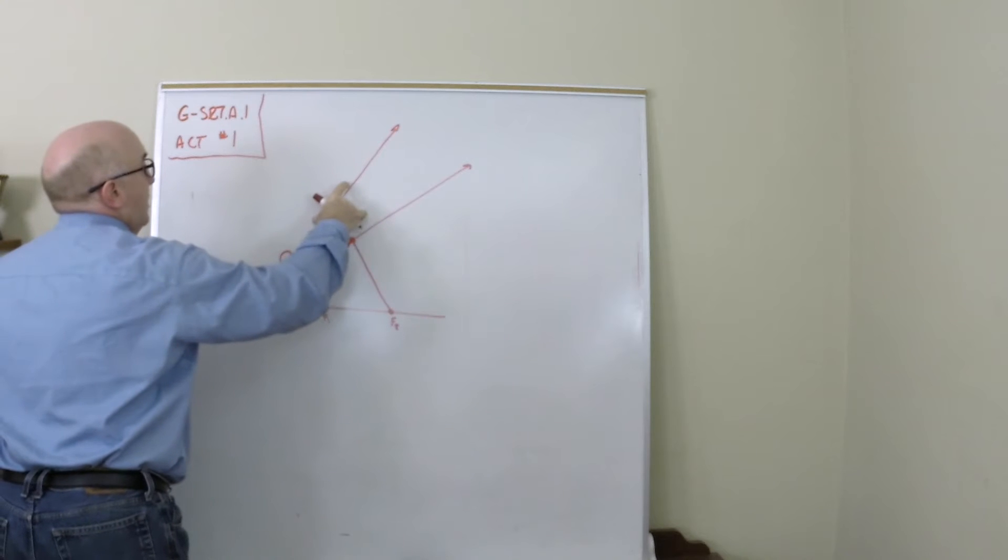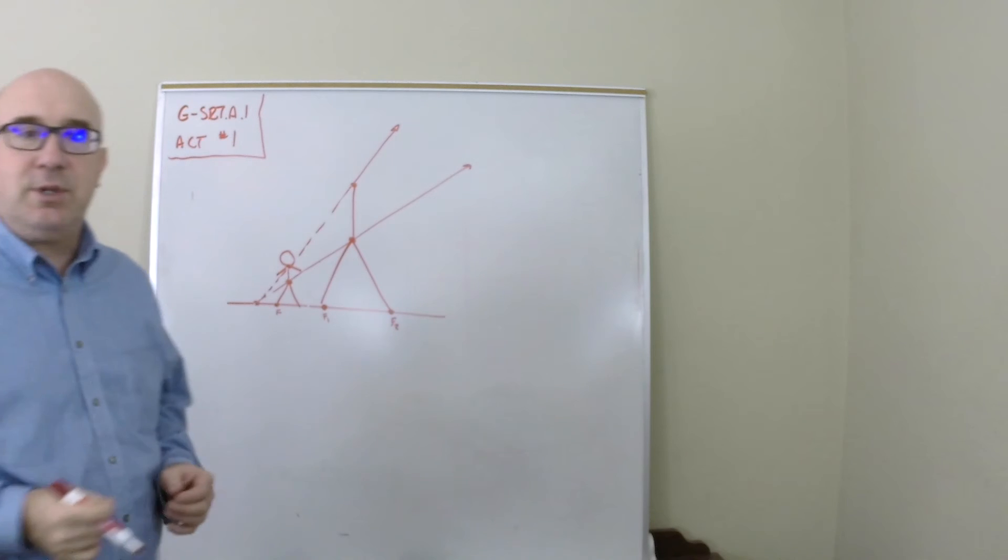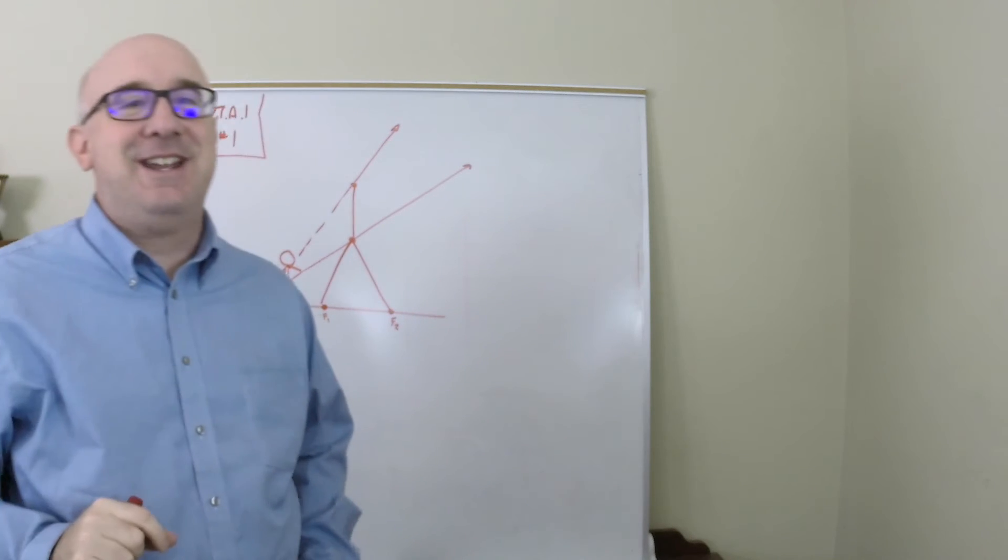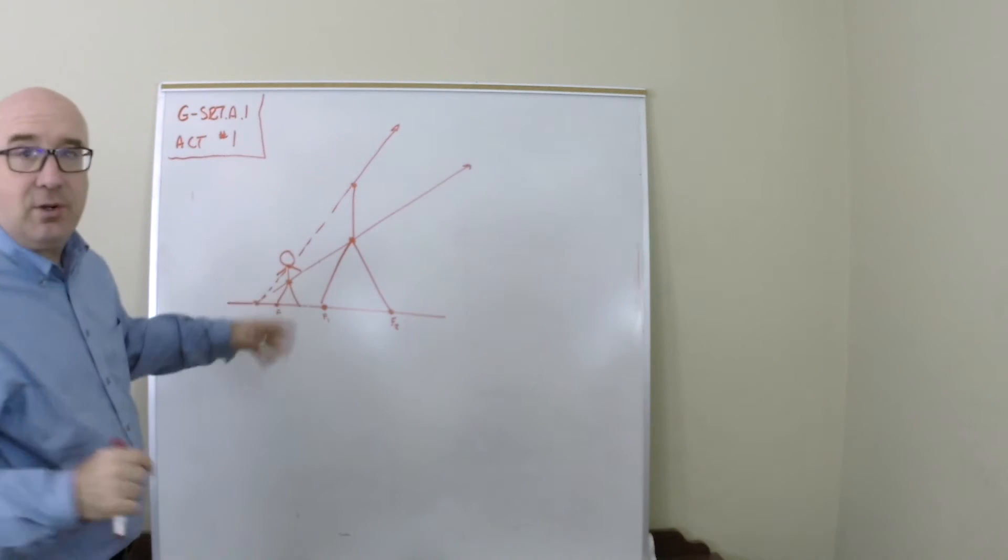I would continue on. I'm using my hand compass. You of course would have a ruler and a compass to do this. Now with things like circles, what I normally do is I only do a couple of points.